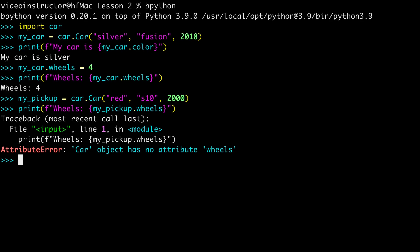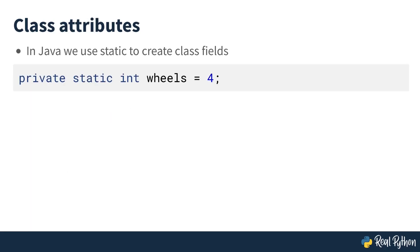In your next lesson, we will continue looking at attributes, specifically class attributes in Python. In Java, we use the keyword static to indicate a class field. This statement, placed with the other field definitions, would create a class field called wheels with a value of four — the same value shared by any instance of the class.